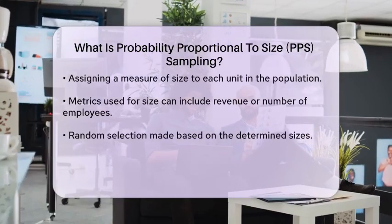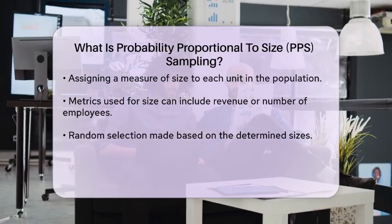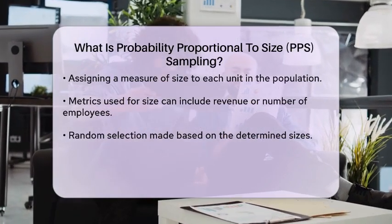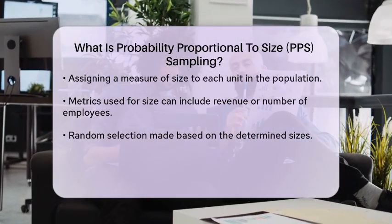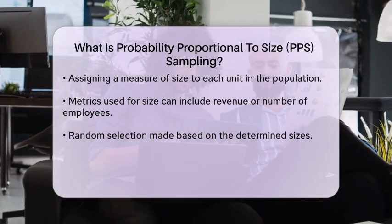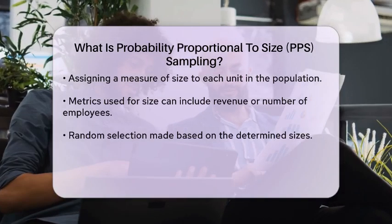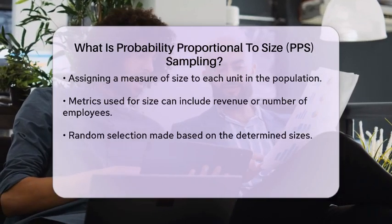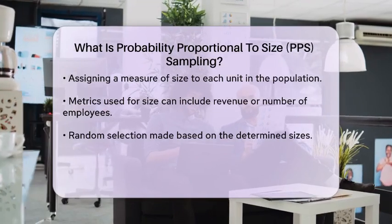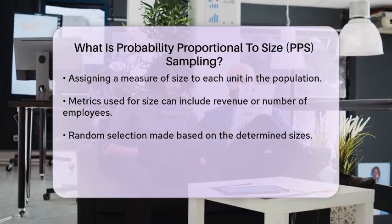The process begins by assigning a measure of size to each unit in the population. This could be based on revenue, number of employees, or any other relevant metric. After determining the sizes, a random selection is made where the likelihood of selecting each unit corresponds to its size.